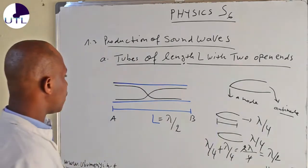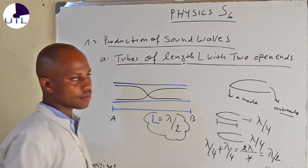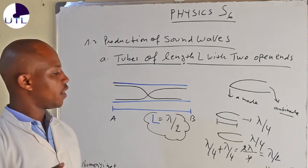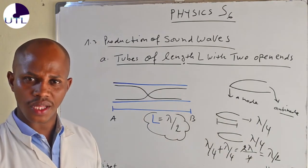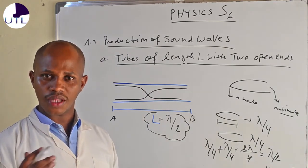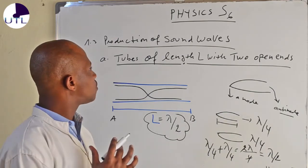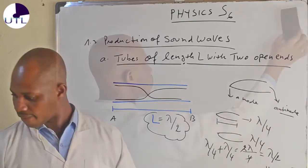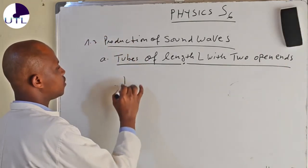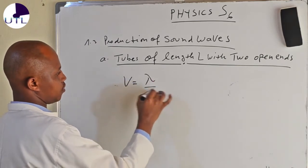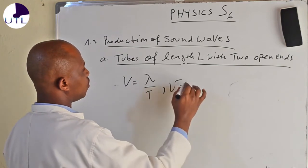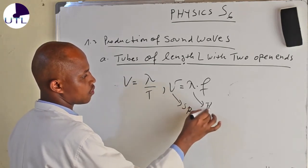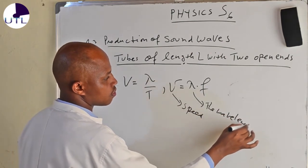That's the reason why we have the length equal to wavelength divided by 2. Now, if you have two consecutive antinodes, you may ask yourself: can we know the velocity of that sound wave in the pipe? Can we find the frequency of this sound wave in that pipe? Very easy. Let us use the formula: the speed is equal to wavelength divided by period, or equivalently, speed is equal to wavelength times the frequency.